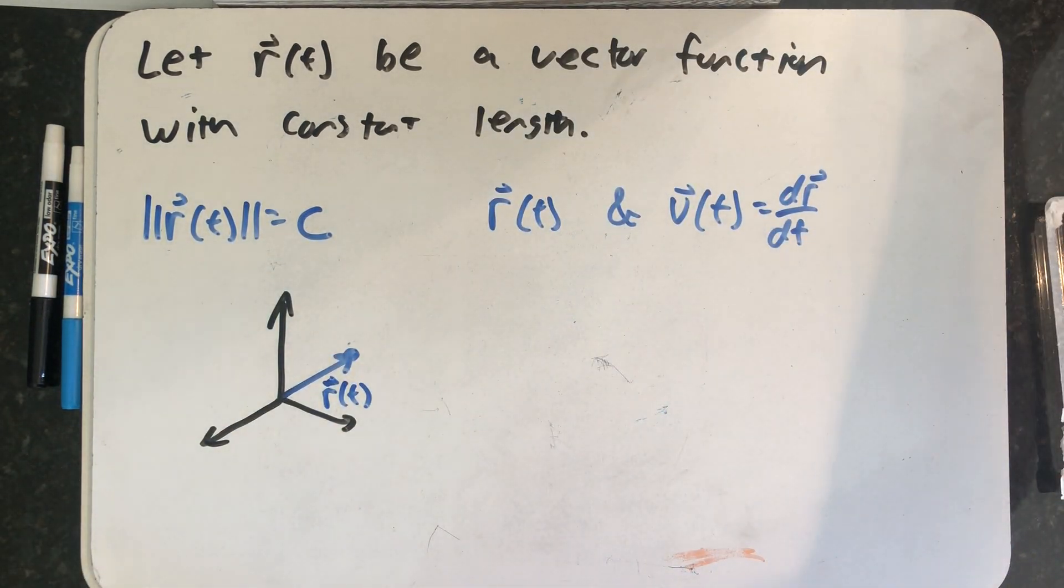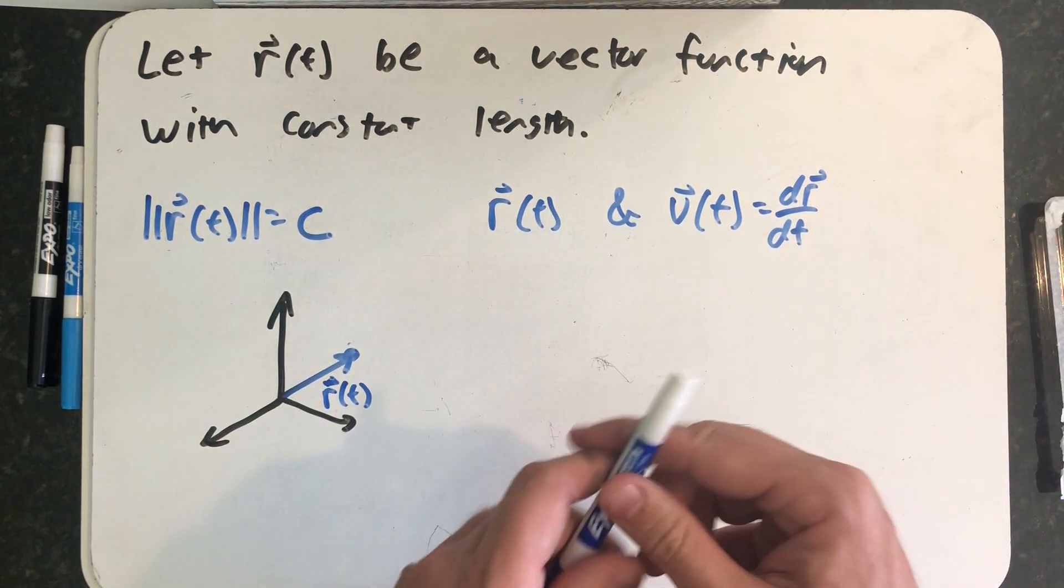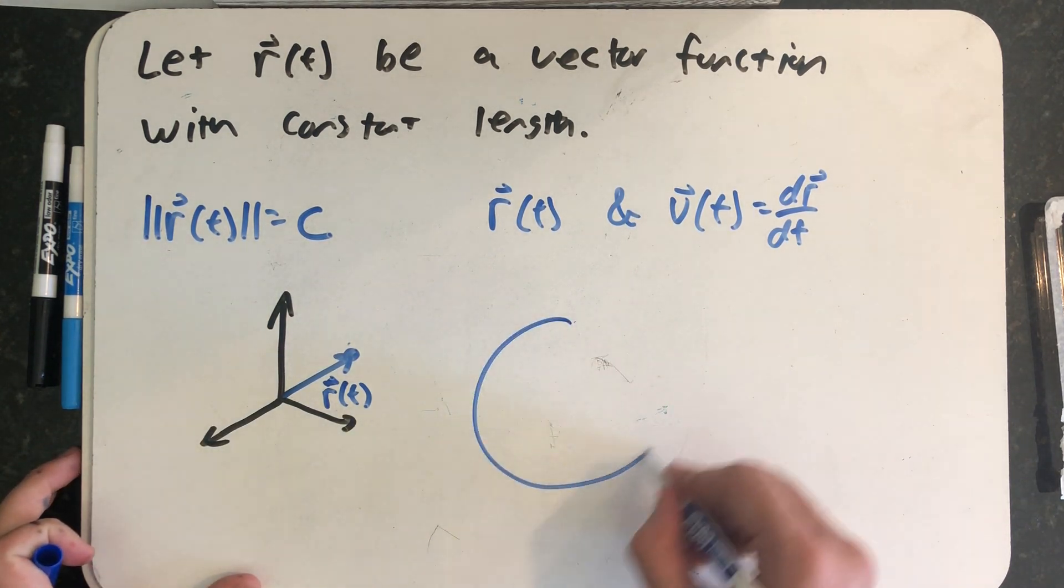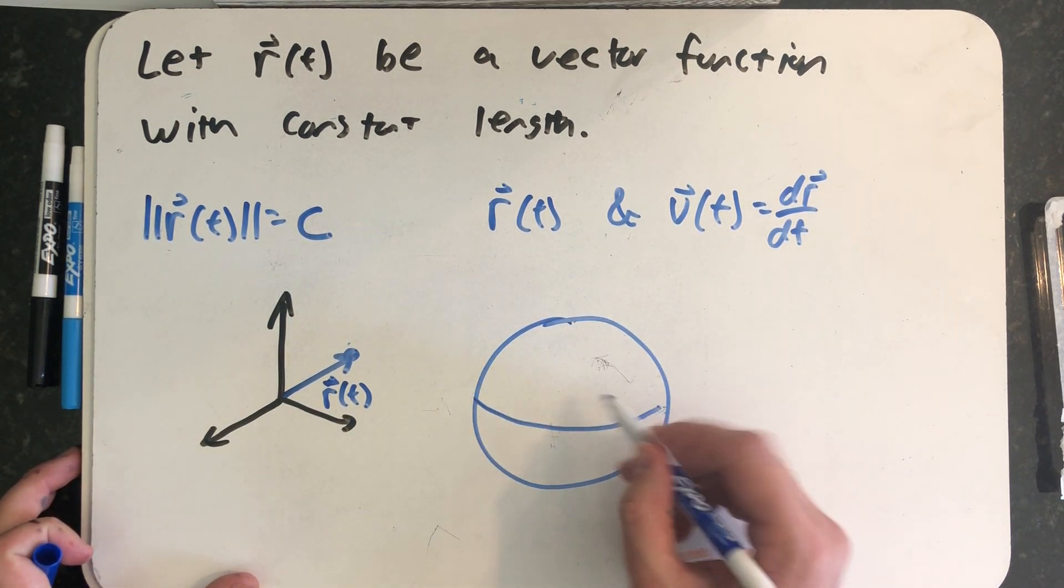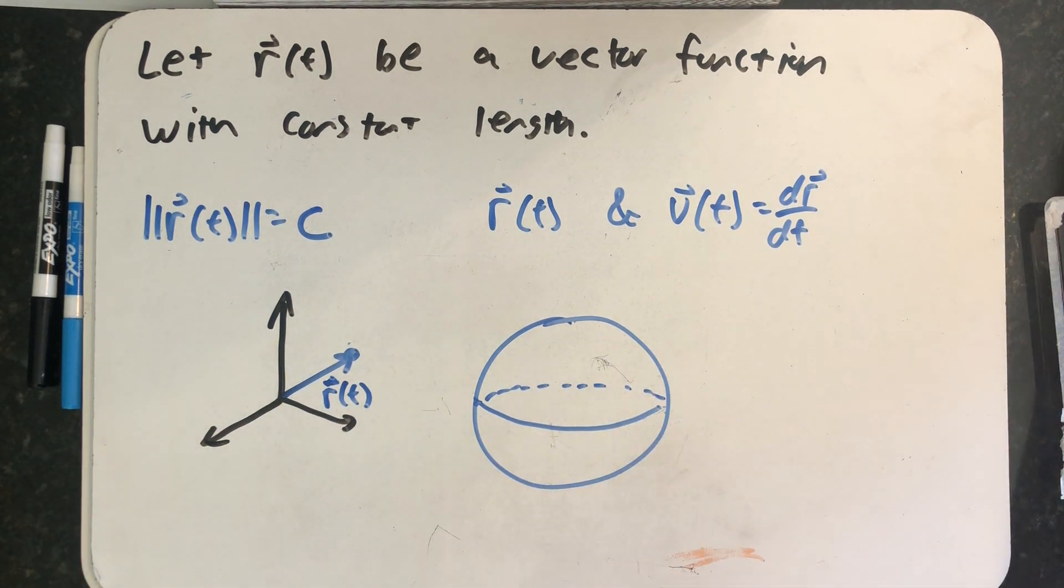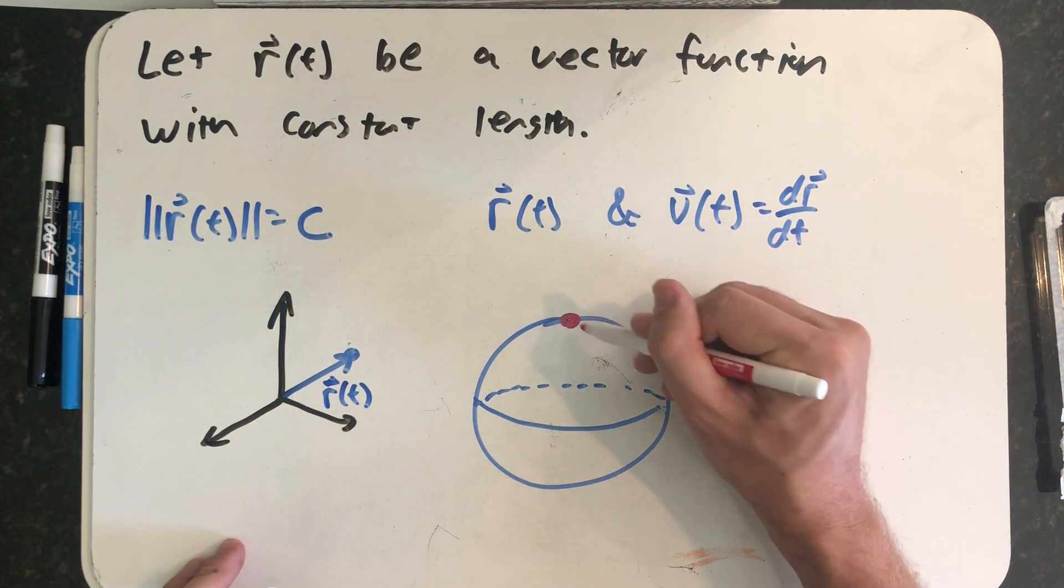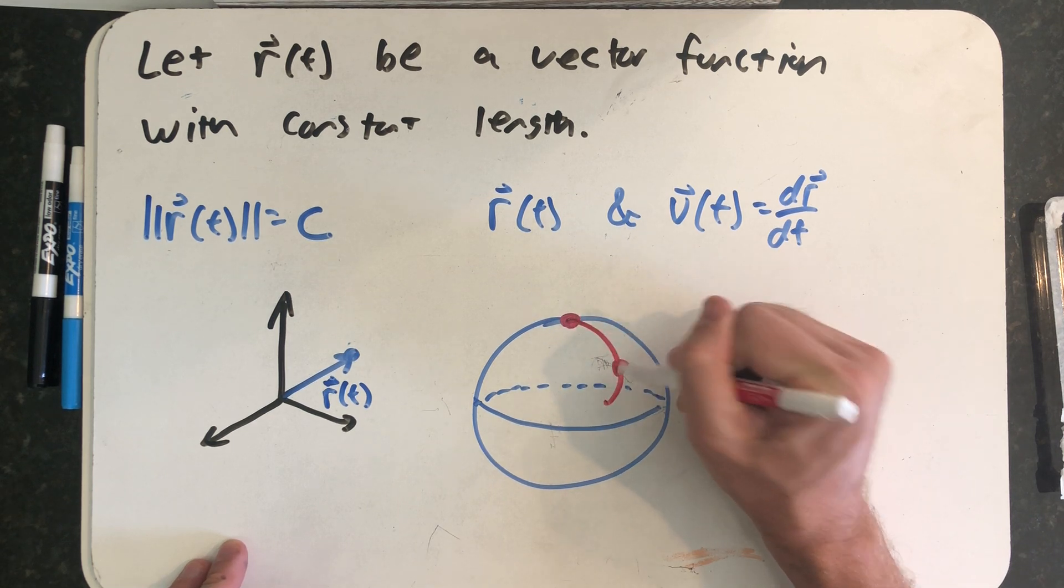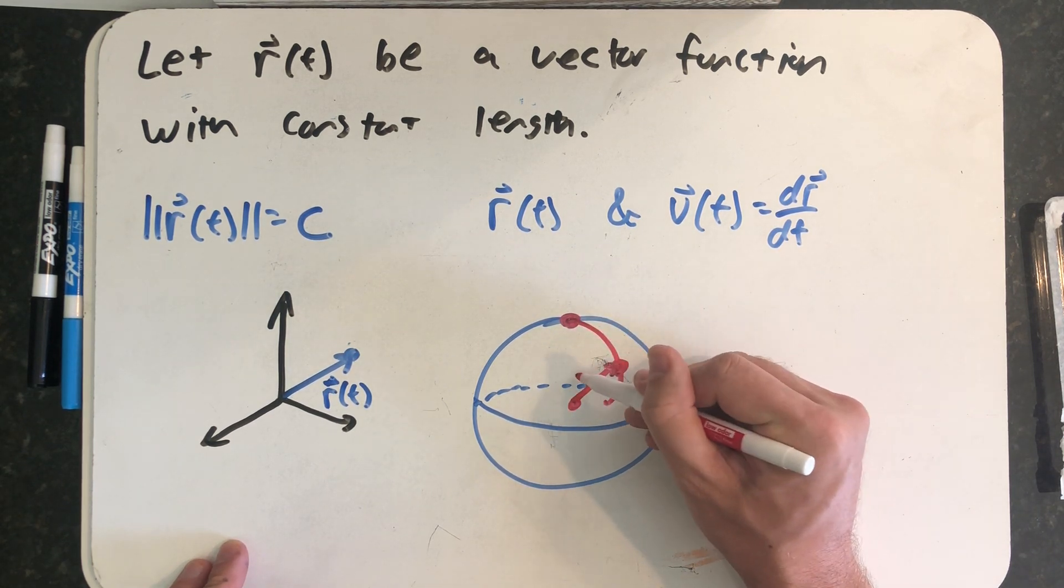See if you can think up the relationship between R of t, which is pointing to a point on a sphere from the origin. So I'll try to crudely draw what's going on here. R of t points from the center of the sphere to that point.